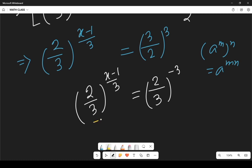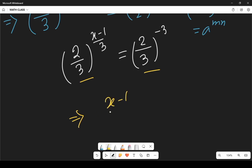Now since the bases are equal so we can equate the powers it will be x minus 1 by 3 equals to minus 3.